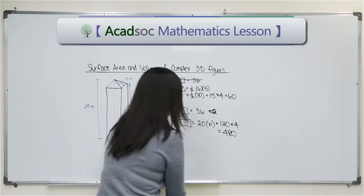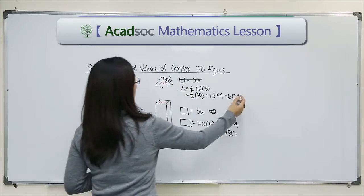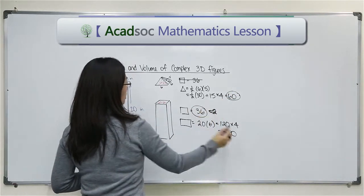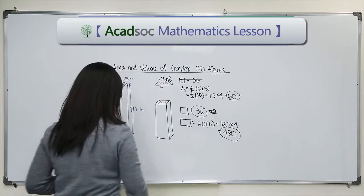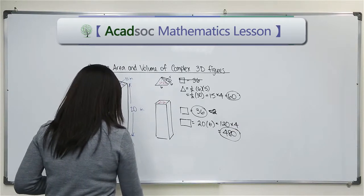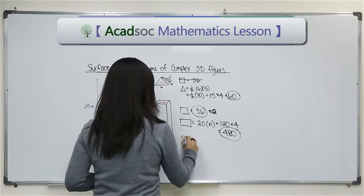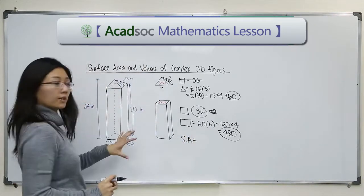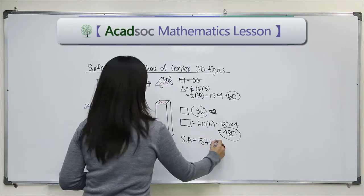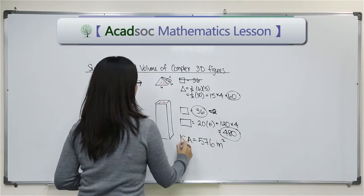So right now, all I have to do is add up the remaining surface area. So I have 60 plus 36 plus 480, and that will give me the surface area of this replica monument to be 576 inches squared because we're dealing with area.